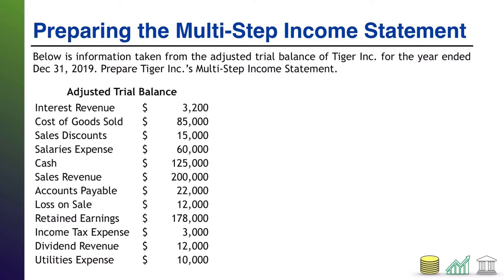Welcome back. So a multi-step income statement, like every financial statement, starts off with a header. We start with the company name, Tiger, Inc., then the financial statement name — income statement. No need to say multi-step; that's just the version we're doing. It's still just an income statement at the end of the day. An income statement covers a period of time, in this case the year ended December 31, 2019. So we put: year ended 12-31-19.